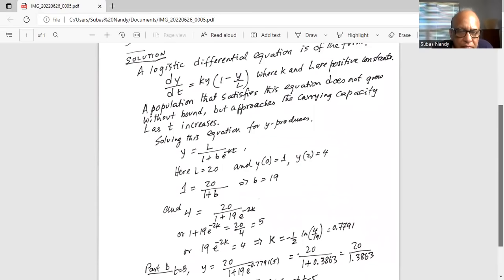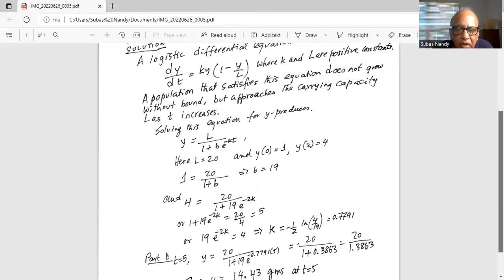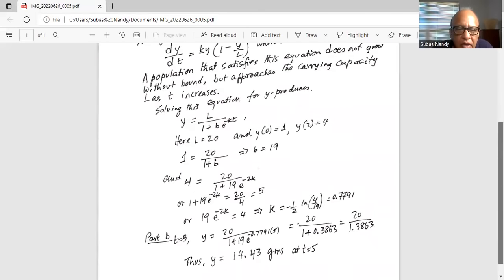So 19 times e to the minus 2k equals 4, and from this we get k equals approximately 0.7791. So we've got the value of k and the value of b.